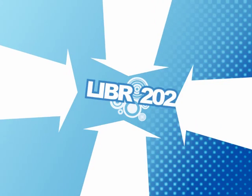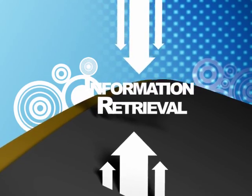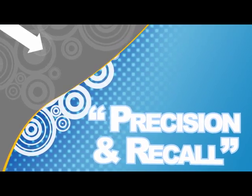This is Jeremy Kemp with San Jose State's School of Library and Information Science, Library 202, Information Retrieval. The concept for this lecture is precision and recall.